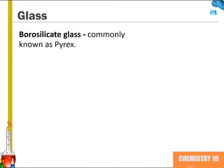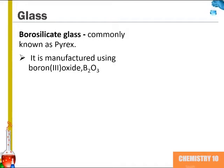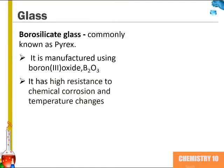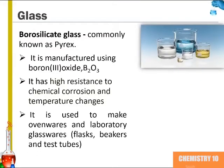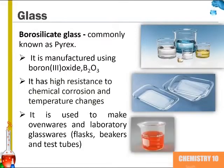Borosilicate glass is commonly known as Pyrex, and you may be familiar with it from different laboratory settings. It is manufactured using boron trioxide. It has a high resistance to chemical corrosion and temperature changes, and it's used to make oven wares and laboratory glass wares such as flasks, beakers, and test tubes.